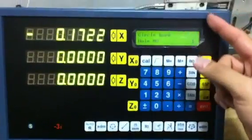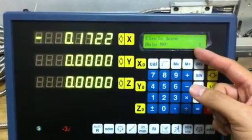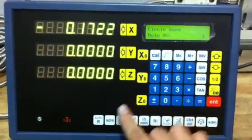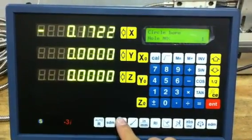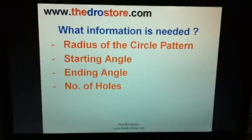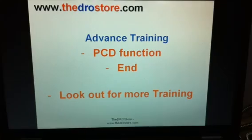And you go back to the first hole position. Move to 0 to finish the PCD function. Just press the PCD button again. That's the end of the PCD function. Thank you. Bye.